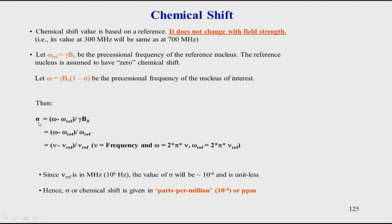In a nutshell, chemical shifts are calculated by taking a reference compound, calling it zero chemical shift, taking the difference of any other peak from that reference, and converting that frequency into the sigma value by dividing by the main magnetic field — that is how we get the PPM value. Importantly, the chemical shift value does not change with field strength, because we have accounted for this by dividing by the magnetic field.